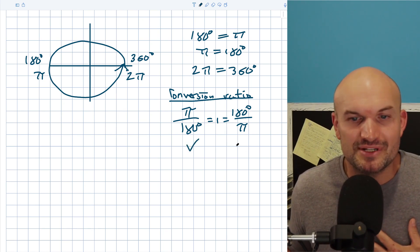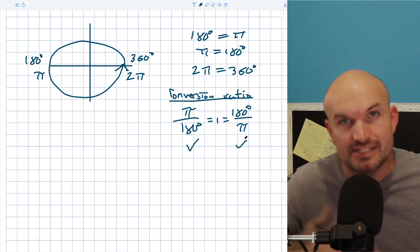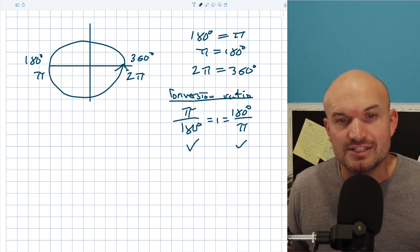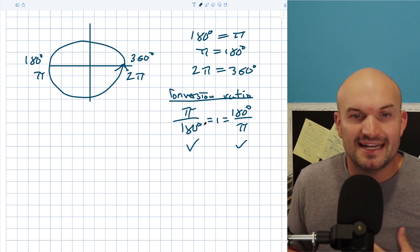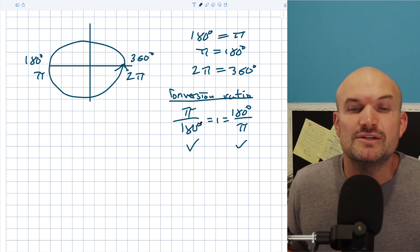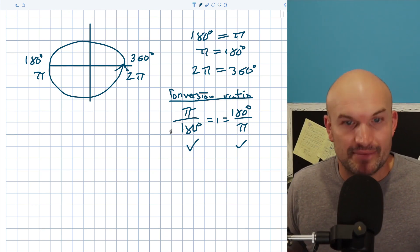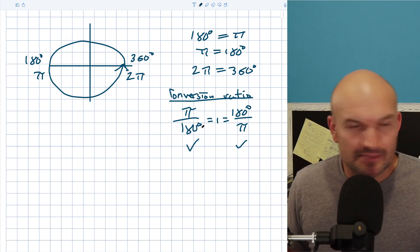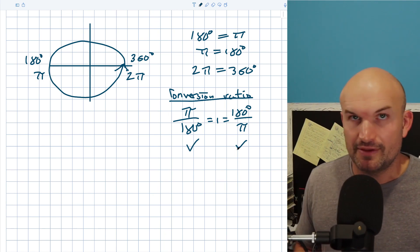And the problem that students have when they're trying to convert from degrees to radians or radians to degrees is which one do I choose? The best tip that I always like to tell students is always to choose the conversion ratio that has the unit you're trying to eliminate in the denominator. Now, some students also might ask, well, why am I doing this? How is this getting converting from one to the other?